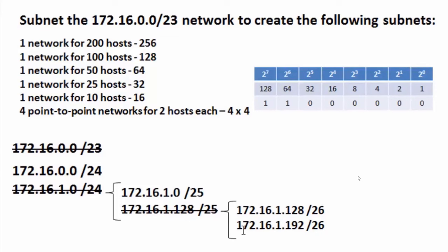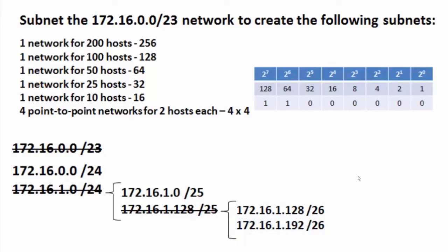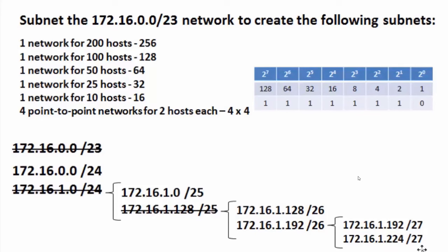I subdivide the second /26 subnet (172.16.1.192/26) into two smaller subnets of 32 hosts each by changing the subnet mask from /26 to /27. This creates 172.16.1.192/27 and 172.16.1.224/27, giving me the 32-host subnet needed for the 25-host requirement.